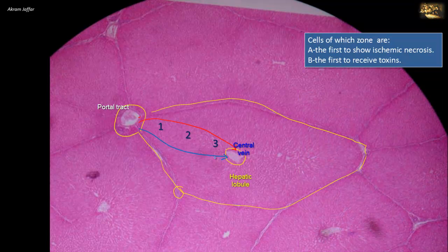Zone 1, located at the periphery of the hepatic lobule, is closest to the portal tract and therefore receives the most oxygenated blood. Zone 3, which surrounds the central vein, is farthest from the portal tract and receives the least oxygen. Zone 3 is thus the most susceptible to ischemic injury. According to the same principle, cells in zone 1 are the first to receive toxins from the blood and are exposed to the effects of toxic substances. Cells of zone 1 are also the last to die if circulation is impaired, because they receive the most oxygen.